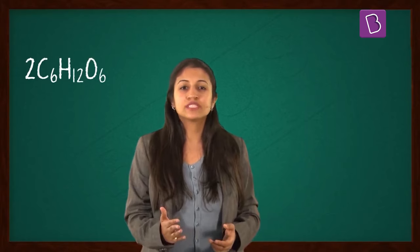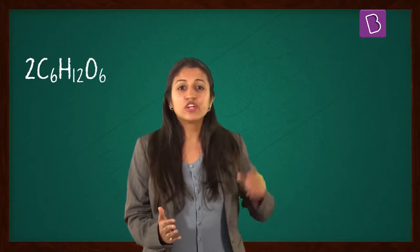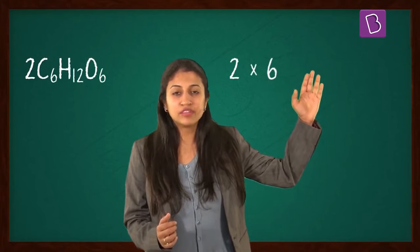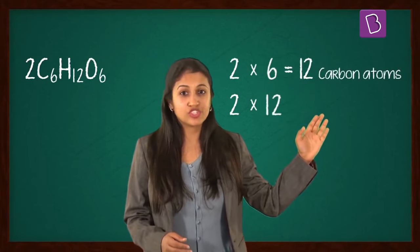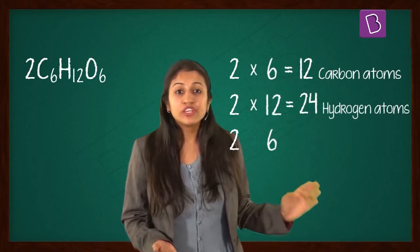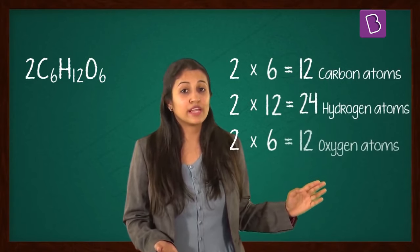In the same way, 2C6H12O6 means there are 2 into 6 atoms of carbon, totaling 12, there are 2 into 12 atoms of hydrogen, totaling 24, and 2 into 6 atoms of oxygen, totaling 12.